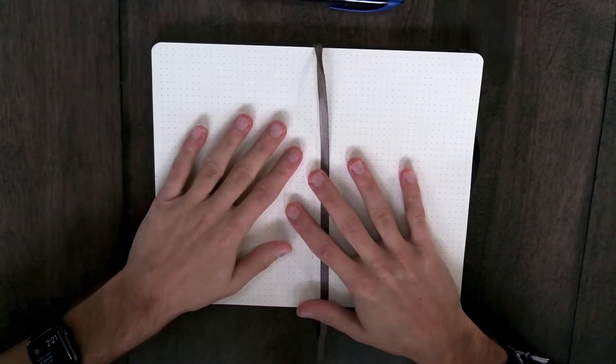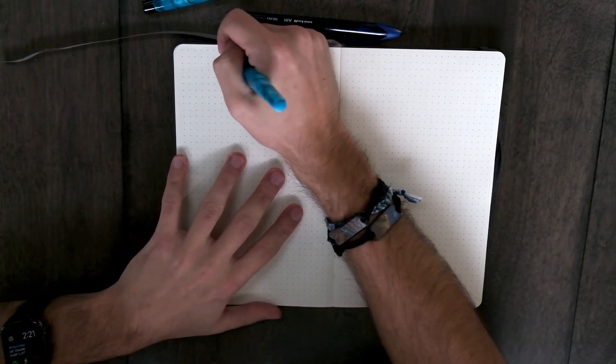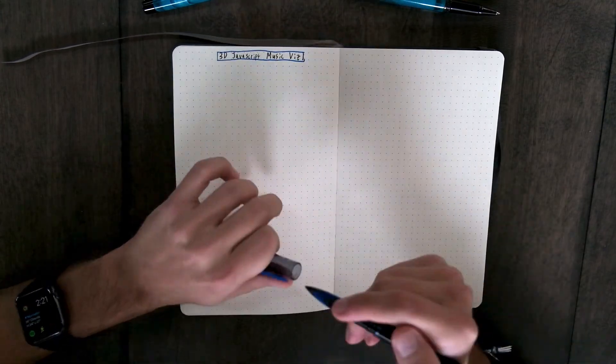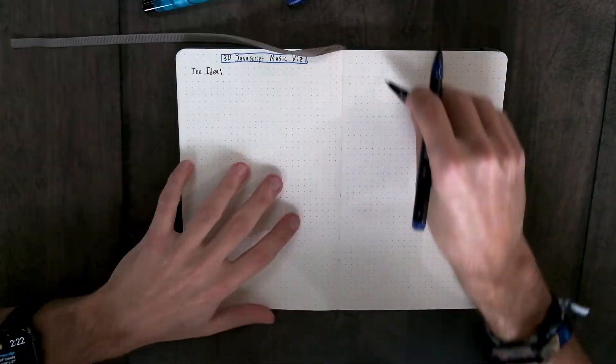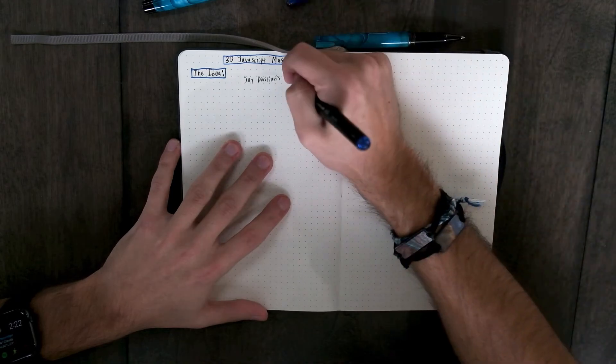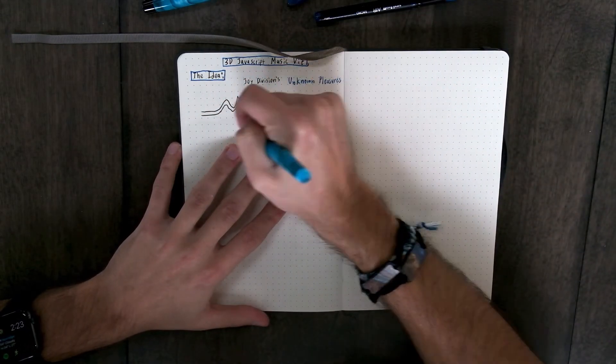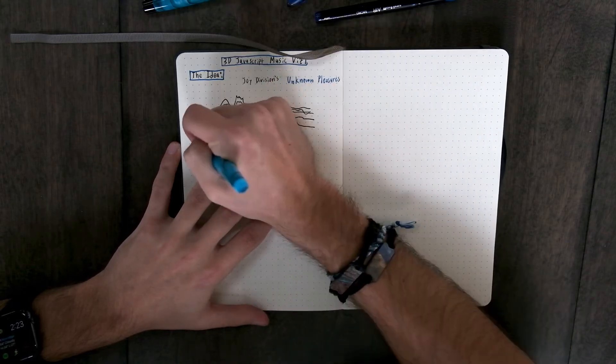As always, let's start by getting out the pen and paper and sketch out the idea that I want to implement today. My main inspiration for this visualizer is Joy Division's Unknown Pleasures album cover, so I want each line representing a snapshot of the fast Fourier transform and the values at that snapshot, and a new line will be drawn every so-and-so milliseconds.